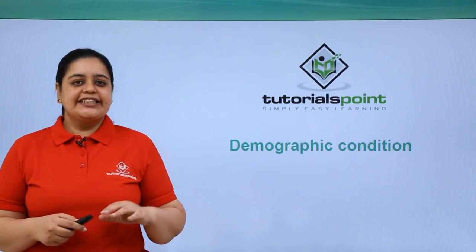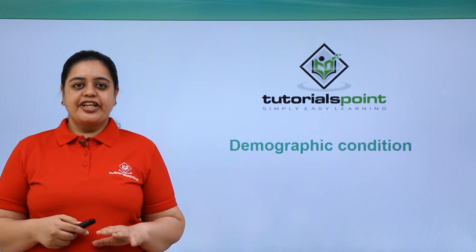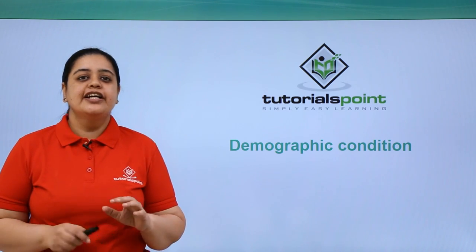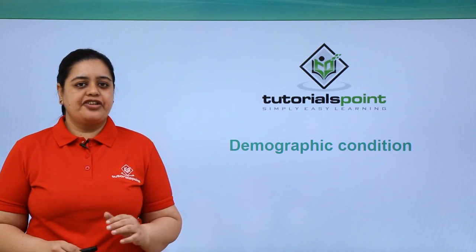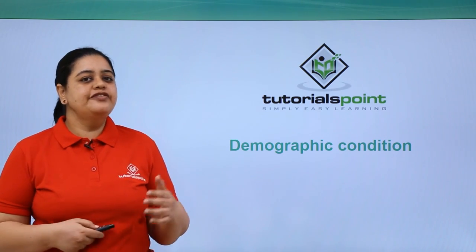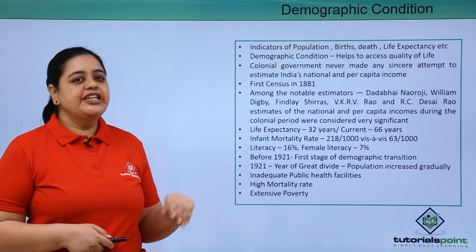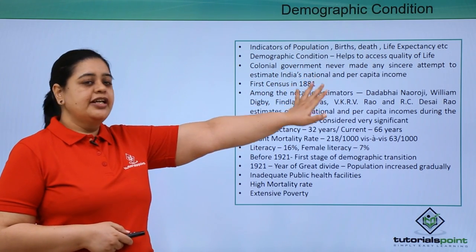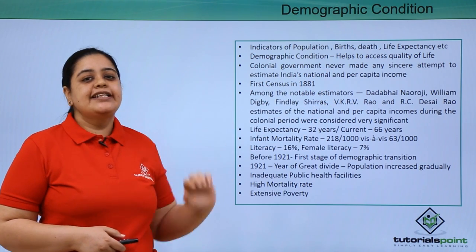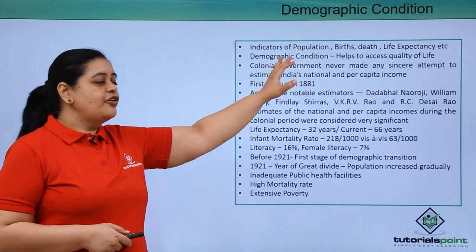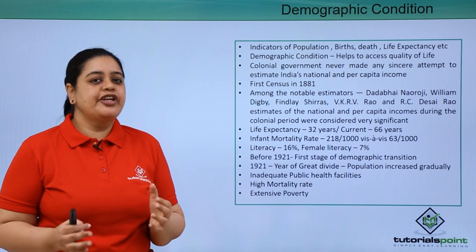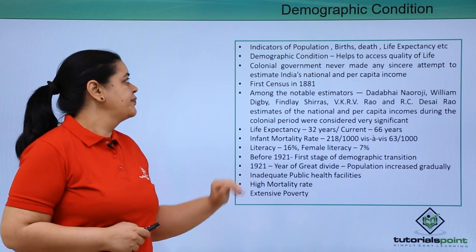To understand the economy of any country, it is necessary that we understand the demographic condition of that particular country, because only then we are able to understand the state of the economy. The indicators of population — the birth and death ratio and the life expectancy — are all factors which help in understanding the demographic conditions of a country.